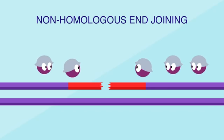The two most common pathways for repairing double strand breaks are called homologous recombination and non-homologous end joining. Homologous recombination uses an undamaged section of similar DNA as a template. Enzymes interlace the damaged and undamaged strands, get them to exchange sequences of nucleotides, and finally fill in the missing gaps to end up with two complete double-stranded segments.